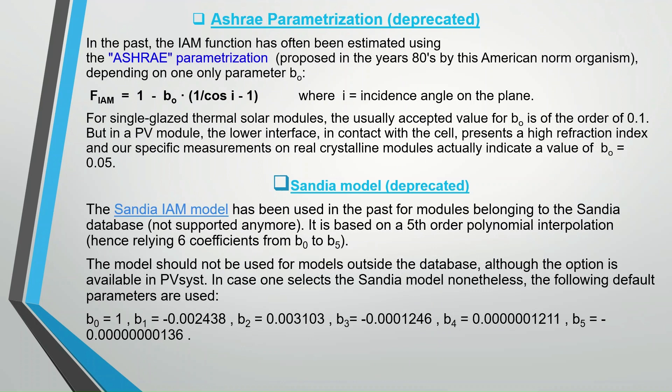In the past, the IAM function has often been estimated using the ASHRAE parameterization proposed in the 1980s by this American standards organization, depending on one only parameter. You can see the formula. For single glazed thermal solar modules, the usually accepted value for b0 is of the order of 0.1. But in a PV module, the lower interface in contact with the cell presents a high refraction index, and specific measurements on real crystalline modules actually indicate a value of b0 equal to 0.05.